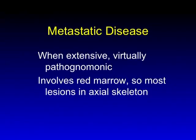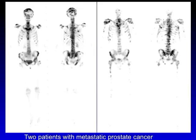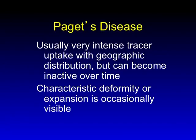Let's talk about a couple of entities you can usually diagnose. Metastatic disease — not necessarily if there's one lesion, but when it's extensive it becomes virtually pathognomonic. Metastatic disease most of the time goes to the red marrow space, so it's an axial skeleton distribution. It's almost unheard of to have an initial diagnosis of an isolated metastatic lesion in the distal extremity. On the left is a patient with metastatic prostate cancer showing the classic distribution. Abnormalities out into the extremities usually occur only in patients with fairly extensive disease.